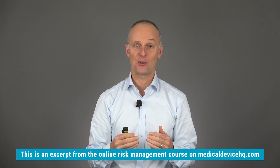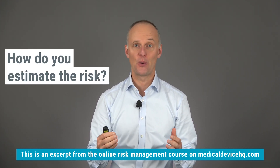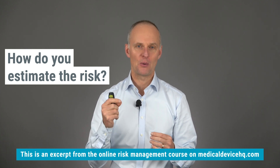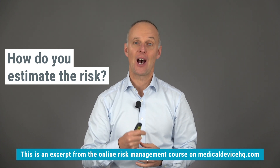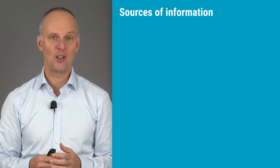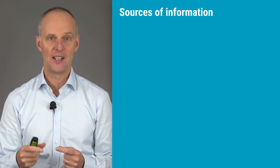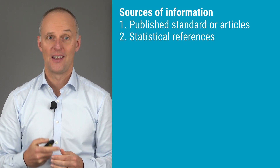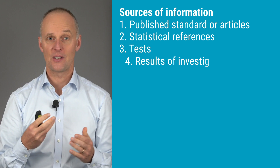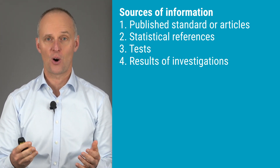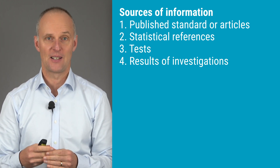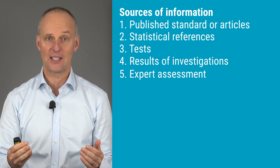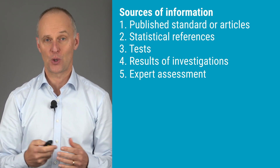Now we've talked about the basics of estimating risk. One of the most common questions I get during my training courses is: how are you supposed to estimate the risk? Let me tell you how it's supposed to be done in the perfect world. When you estimate the risks, you should ideally be finding information from the following sources in order of priority: published standards or articles about similar devices; statistical references to products already on the market; tests that you do to explore risks; results of investigations and analyses — this could be calculations, Monte Carlo simulations, or fault tree analysis; and expert assessment, for example when consulting internal or external experts on how often things would go wrong.